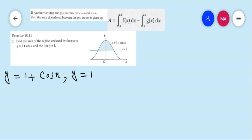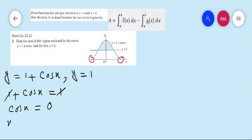In this question the limit of x is not given, so from this point to this point we need the two x-coordinates. Very easy — just compare the two equations and drop y: 1 plus cos x equals 1. The ones cancel, so cos x equals 0, which means x equals cos inverse of 0.